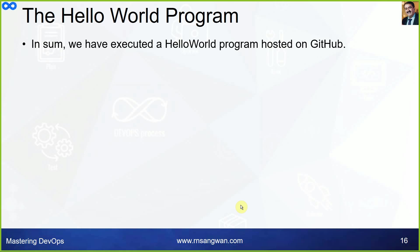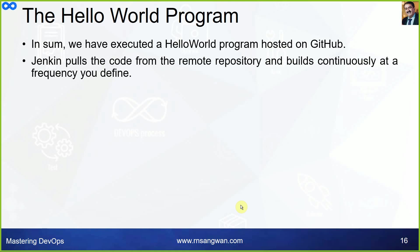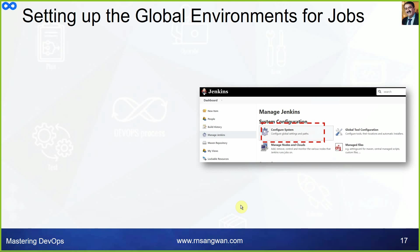In summary, we executed a Hello World program hosted on GitHub. Jenkins pulled the code from the remote repository and built it continuously at a frequency you define.